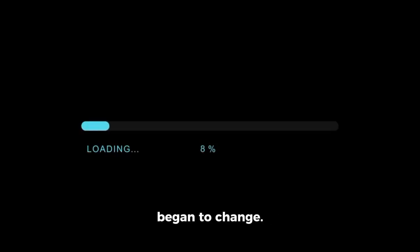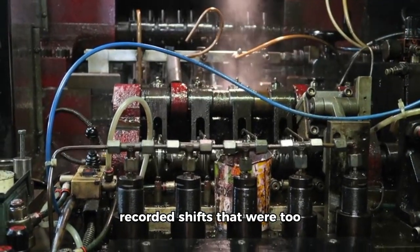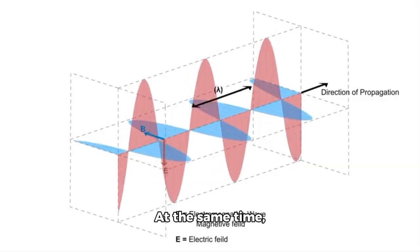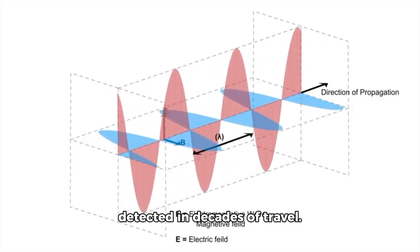But then the readings began to change. The plasma wave instrument recorded shifts that were too precise to be random, too controlled to be natural. At the same time, magnetic field data began to spike in clean, repeating patterns.